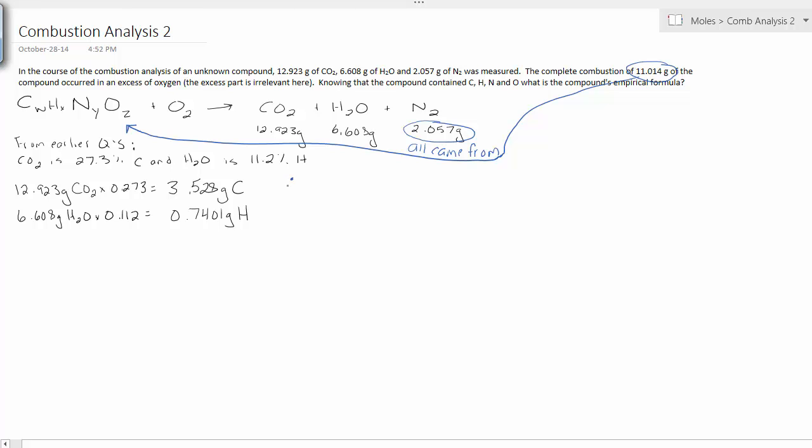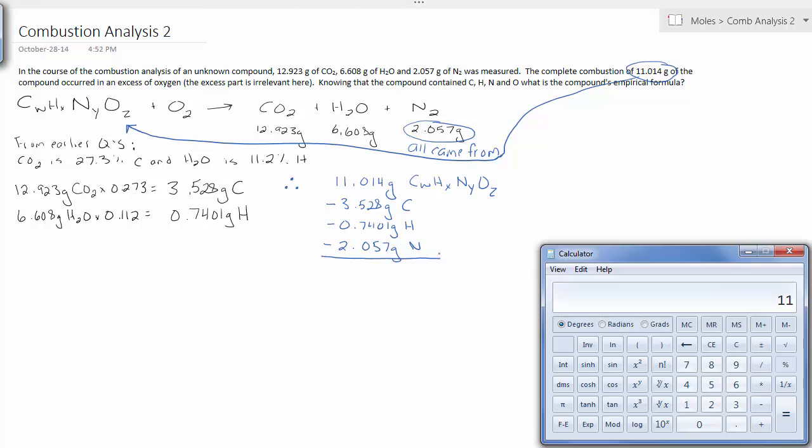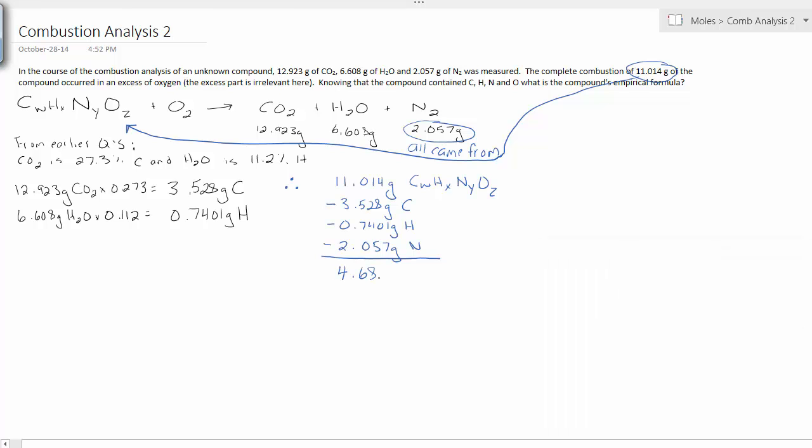So now I know how much carbon, hydrogen, and nitrogen were in the original 11.014 grams, so I'm going to run some subtraction here. I'm going to take the original 11 grams, subtract 3.528 grams of carbon, 0.7401 grams of hydrogen, 2.057 grams of nitrogen, and whatever's left must be oxygen. So the compound, the unknown compound contained 4.6889 grams of oxygen.